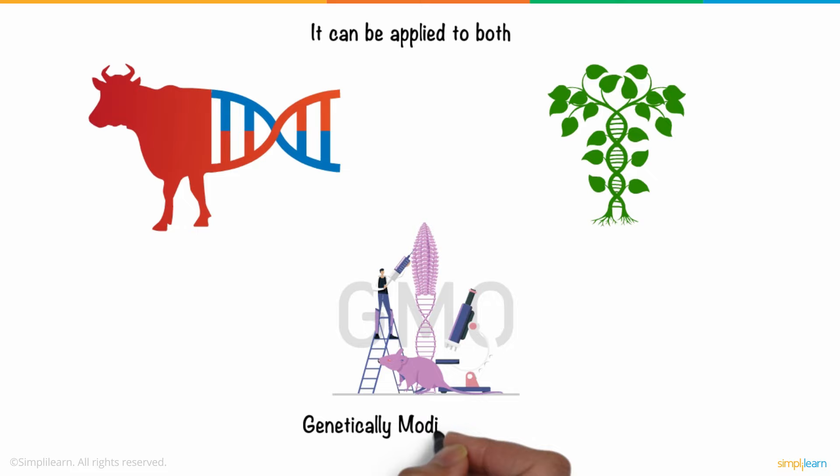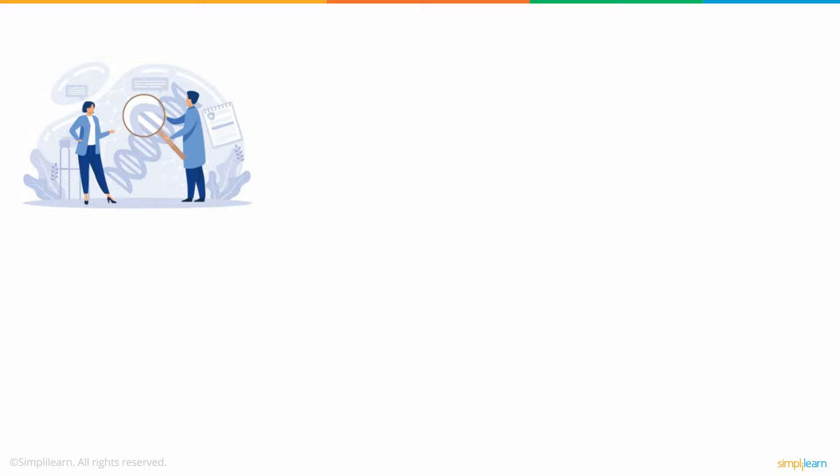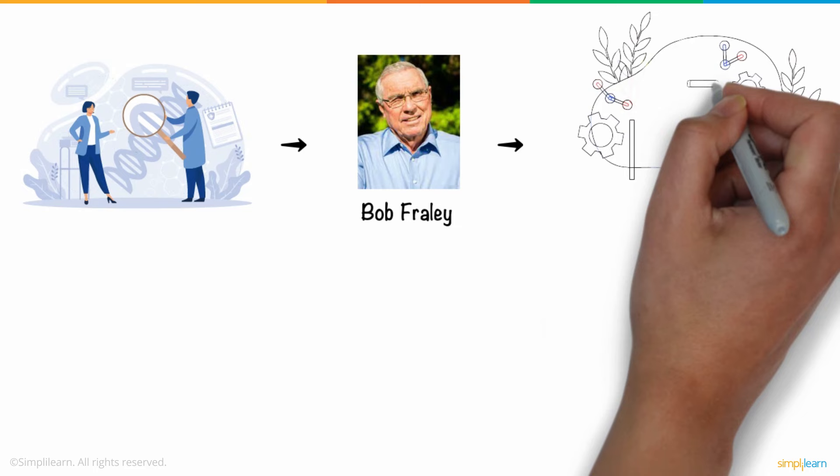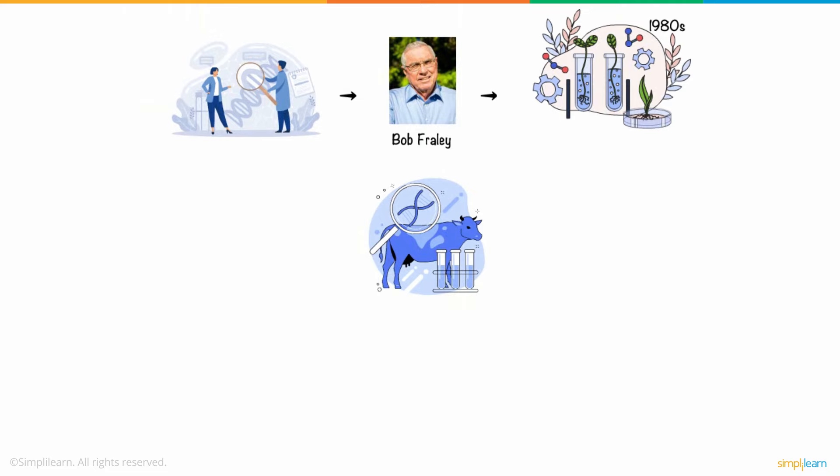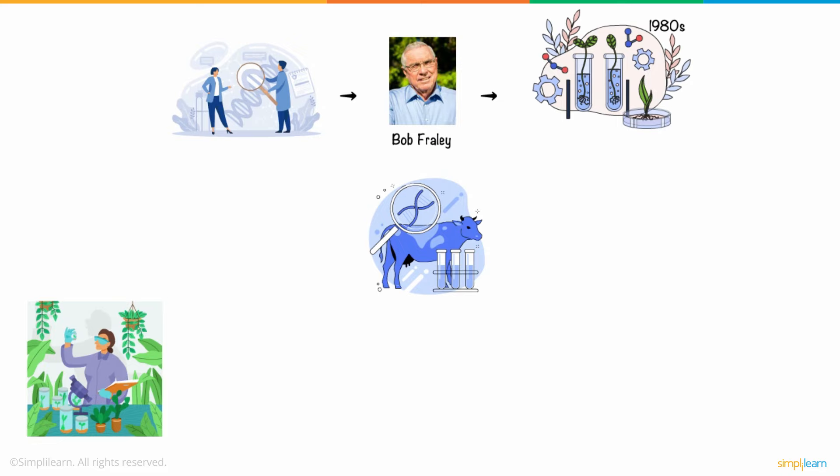The production and study of genetically engineered organisms became possible after Bob Fraley, among others, transformed plant cells with new DNA fragments in the early 1980s. Humans have been modifying creatures through breeding for a long time. Over many years, breeders have had techniques that make for certain animal features.